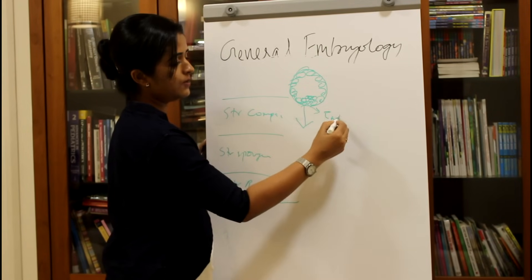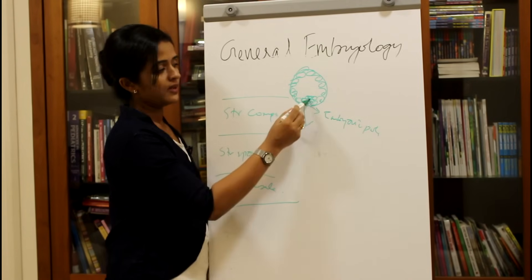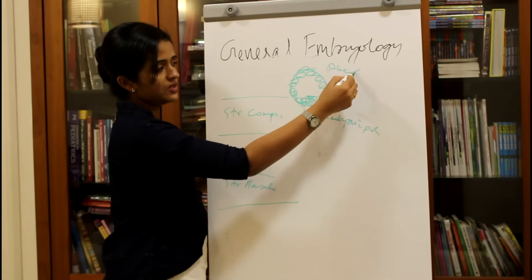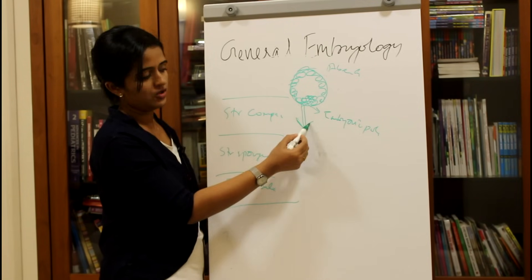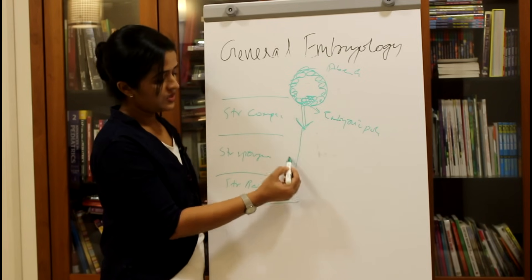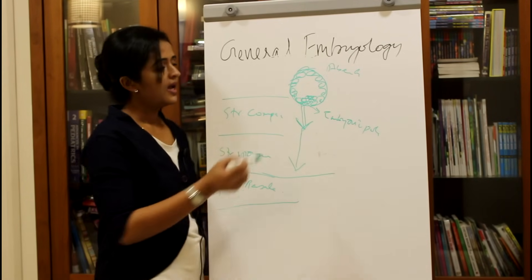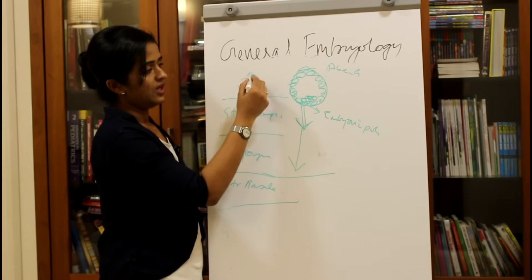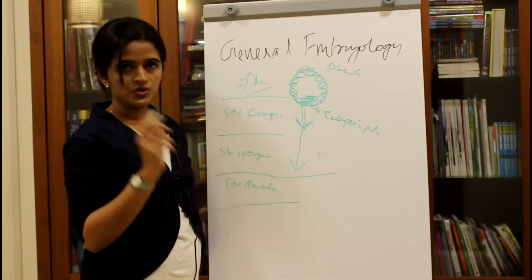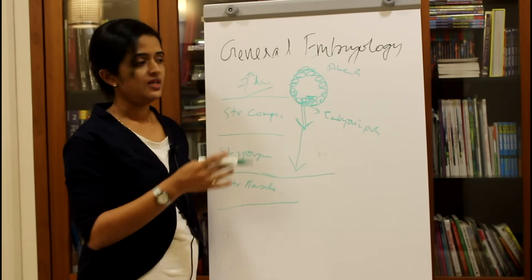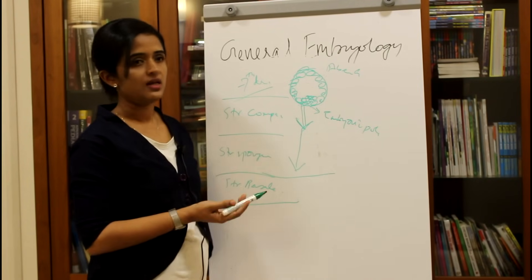The embryonic pole is defined as the pole to which the embryoblast is attached, and the rest is called the abembryonic pole. It is the embryonic pole which gets attached first onto the uterine endometrium. It will first pierce the stratum compactum, then pierce the stratum spongiosum, and get implanted — it won't go beyond the stratum spongiosum. This process starts by the seventh day of intrauterine life, and it takes roughly two to three days to complete the process of implantation.